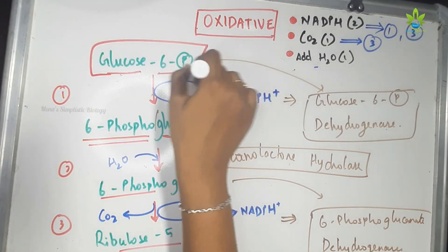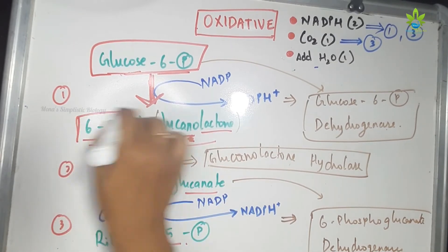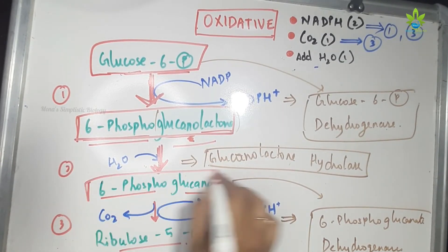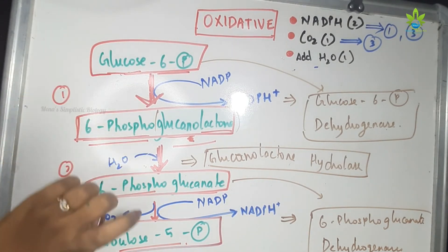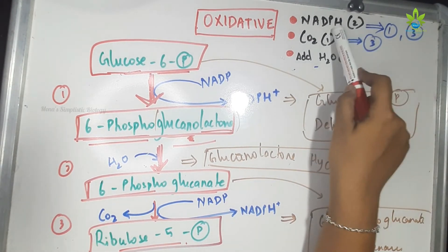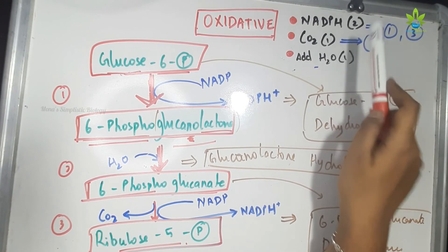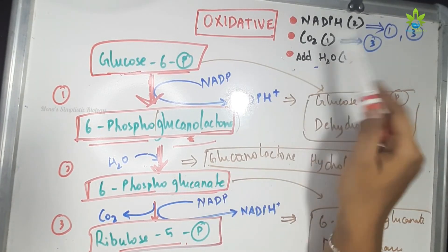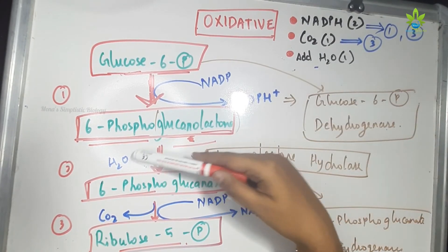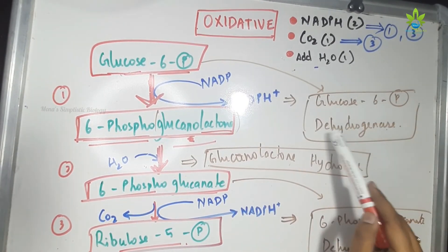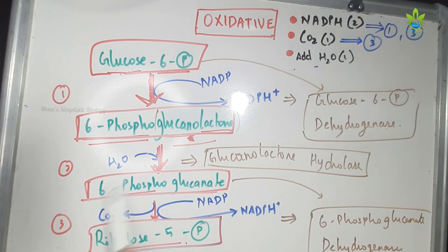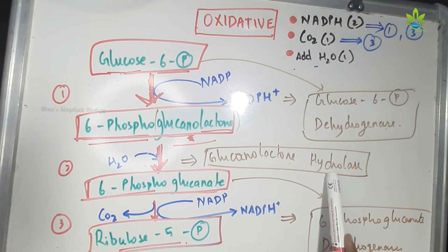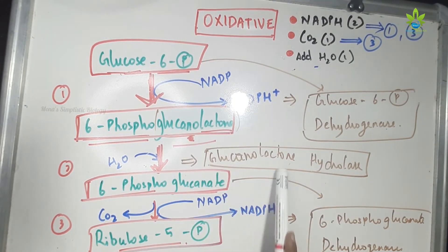So to summarize the oxidative phase of HMP: glucose-6-phosphate is converted into 6-phosphogluconolactone, which is further converted into 6-phosphogluconate, and the final product is ribulose-5-phosphate. This is all irreversible. The oxidative phase produces 2 NADPH, 1 CO2, and 1 H2O. NADPH is involved in the first and third reactions where the enzyme is dehydrogenase, CO2 is released in the third reaction, and H2O is added in the second reaction.